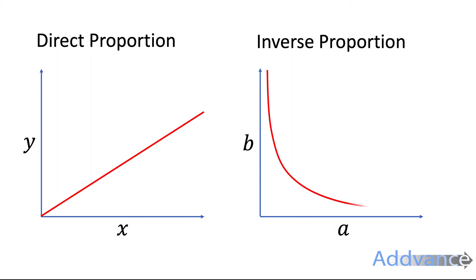Inverse proportion is the opposite. As one thing goes up, the other thing goes down. So looking at this graph, as a goes up, b goes down.